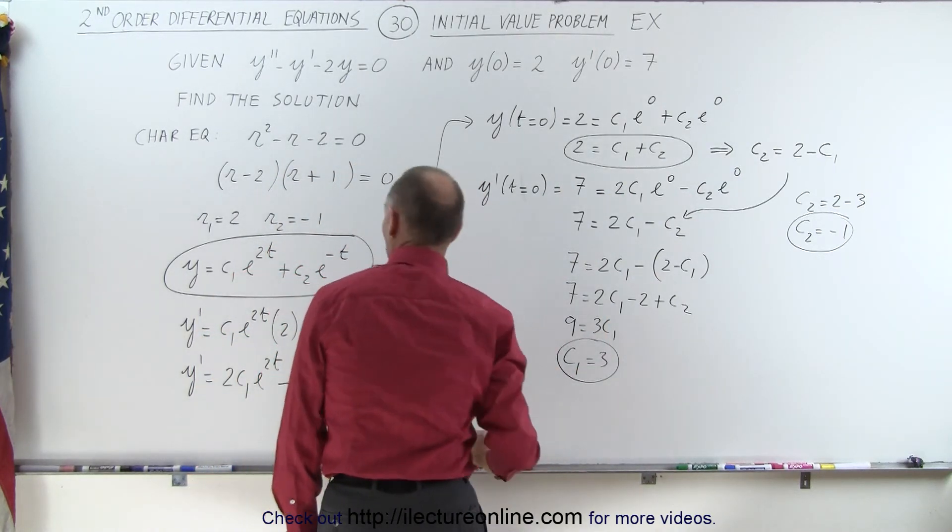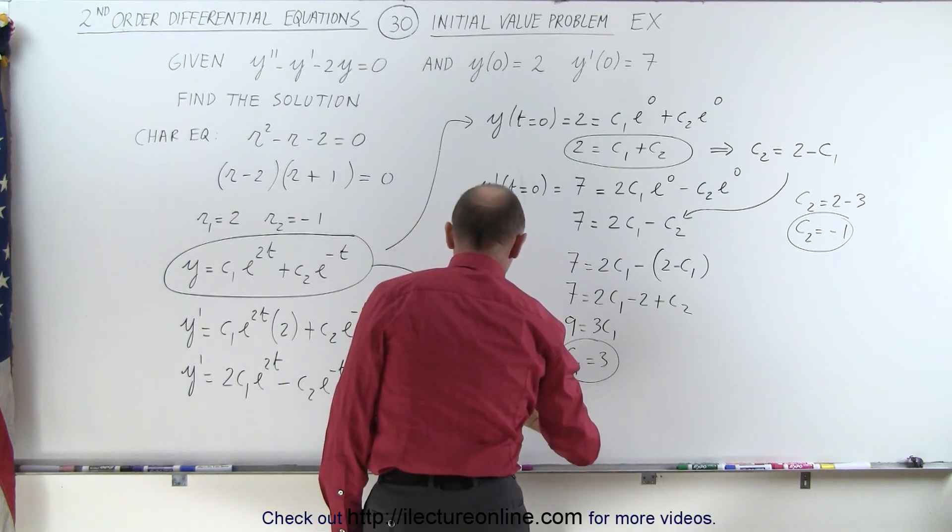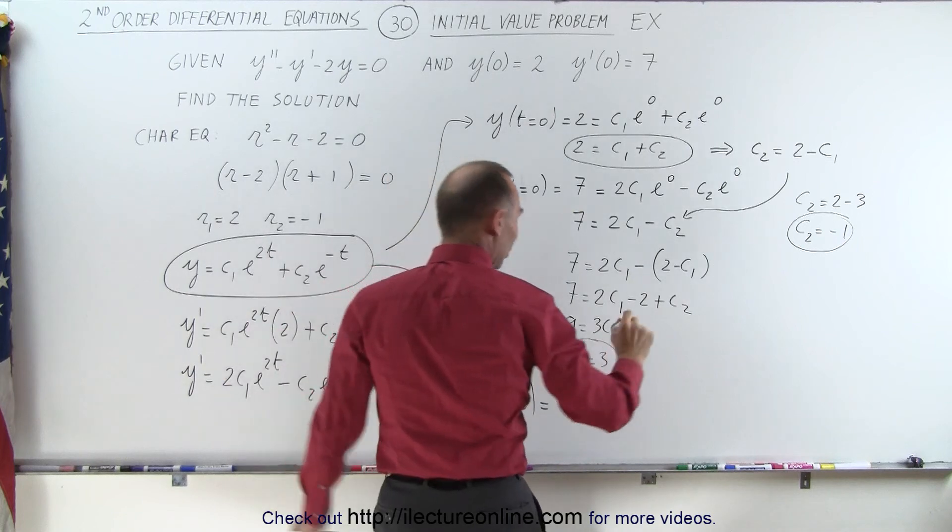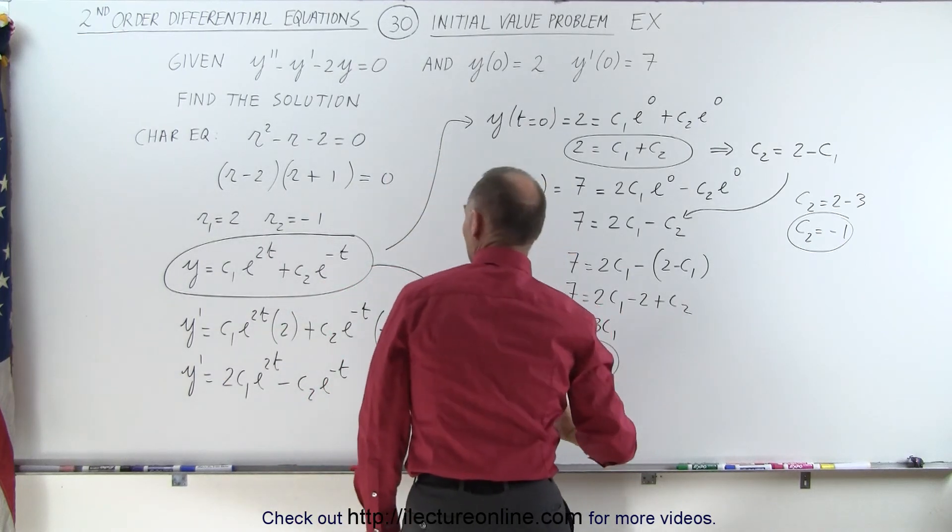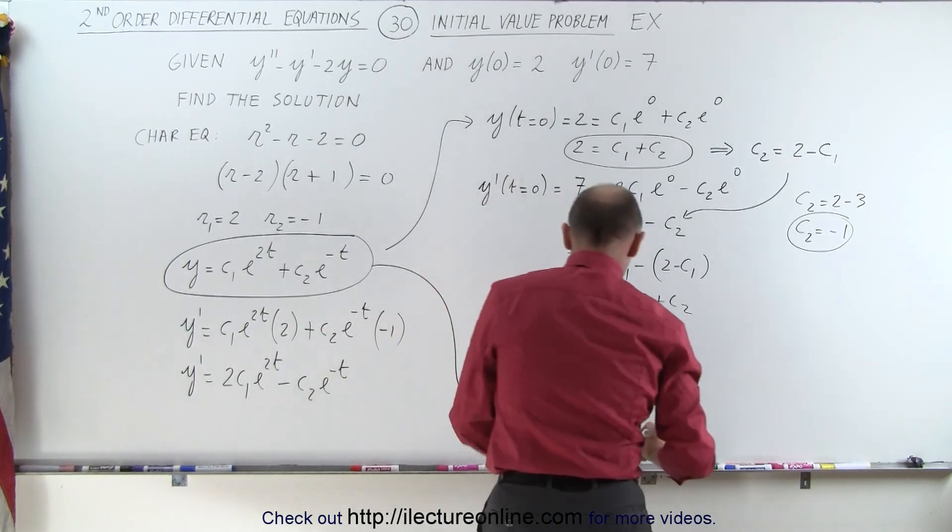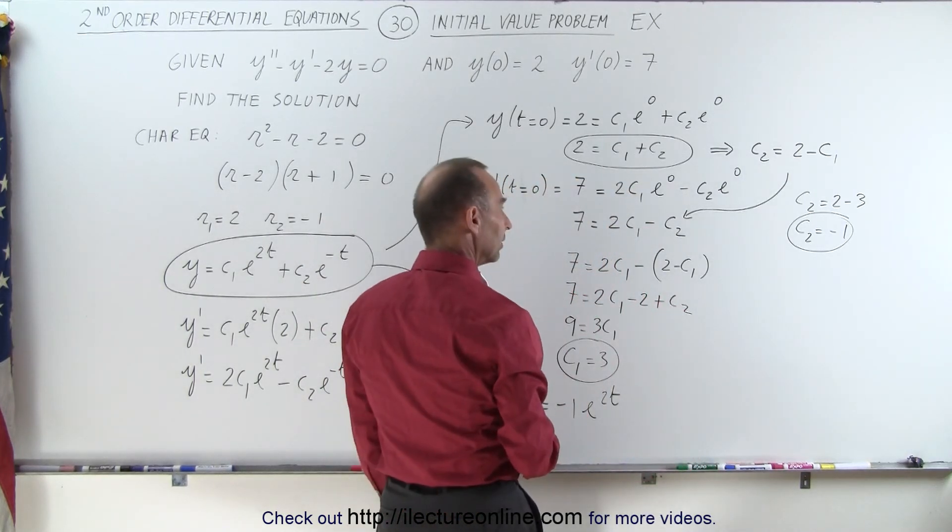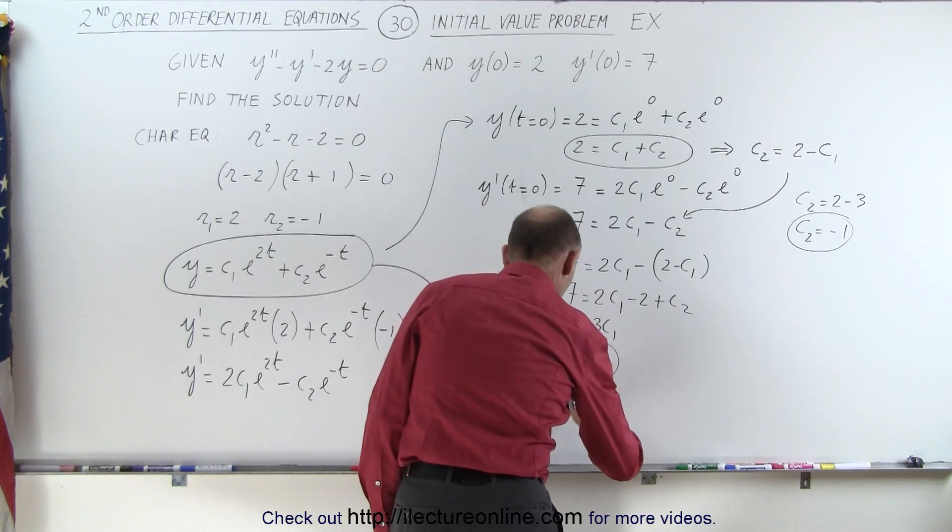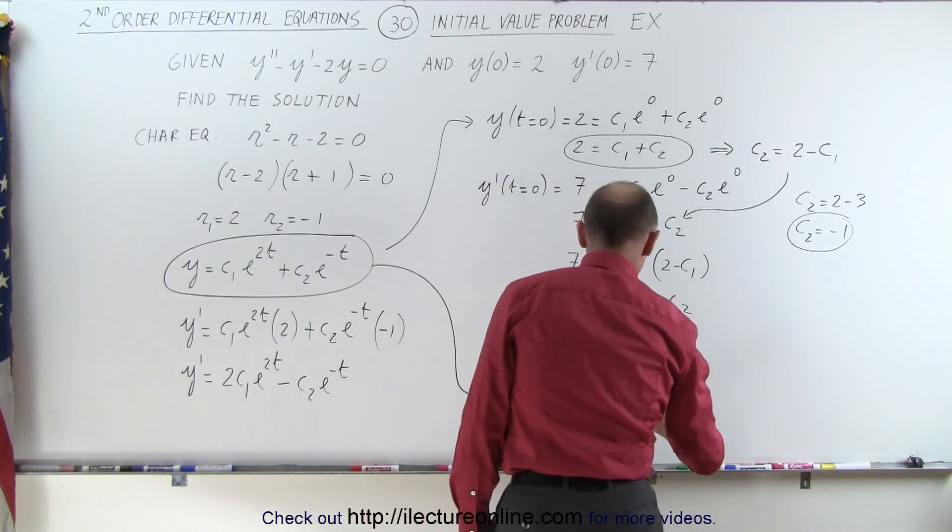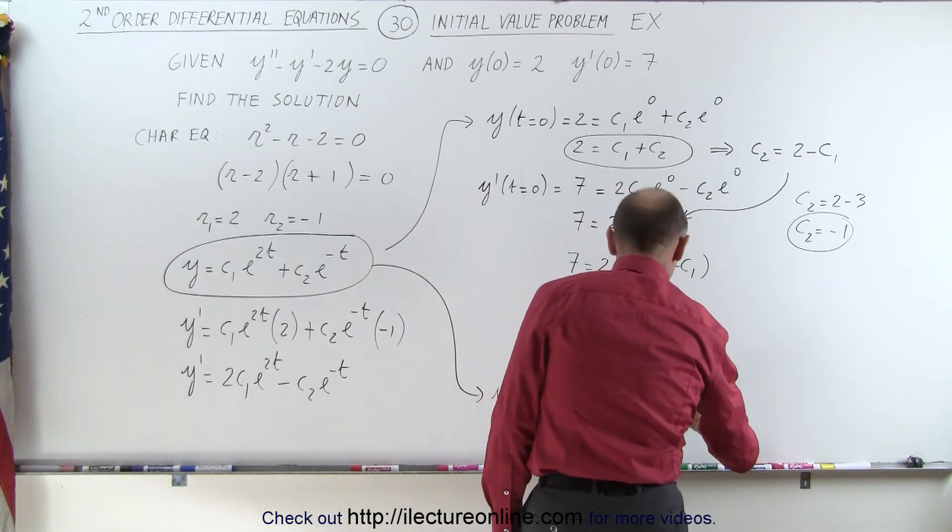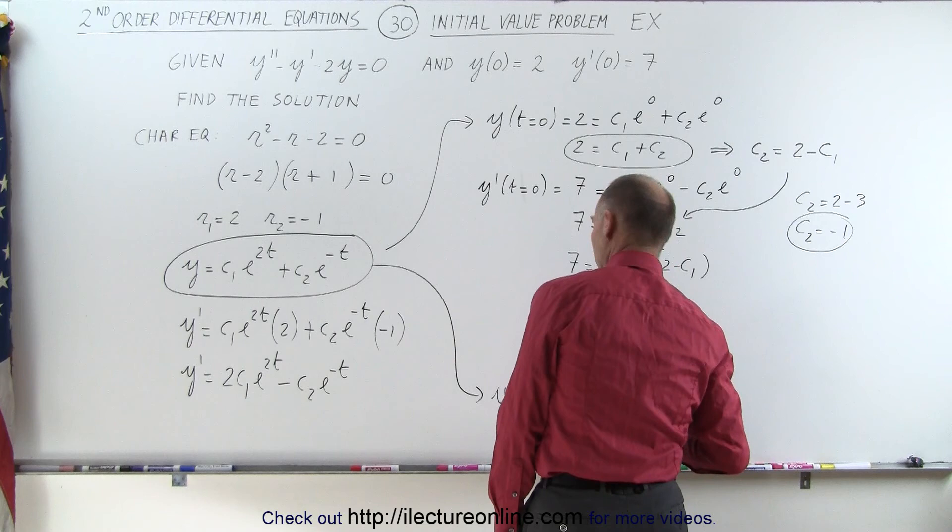When we plug those into our equation, our general solution, we can then say that the exact solution, y as a function of time, is equal to c1, which is minus 1 times e to the 2t, and then c2 is 3. Oh, wait a minute. No, that's not correct. c1 is 3. I took the wrong constant. So this is equal to 3 e to the 2t, and then c2 is minus e to the minus t, and that is correct.